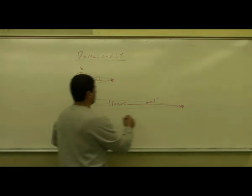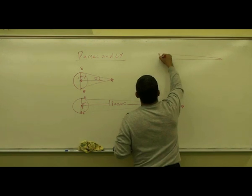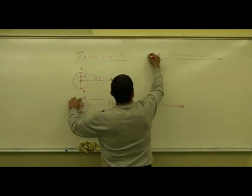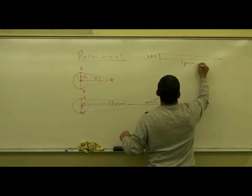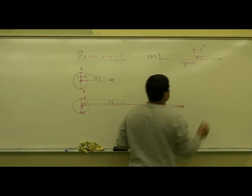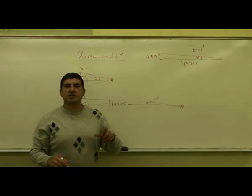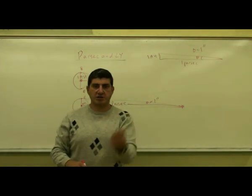So this triangle we can simply draw like this. This distance is one AU, this is one parsec, and this is an angle equal to one arcsecond, which is a very, very small angle.